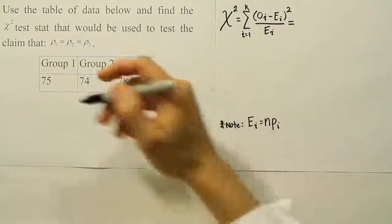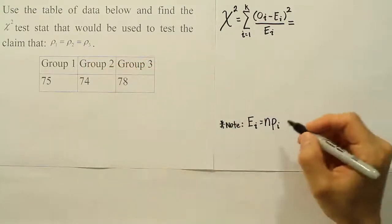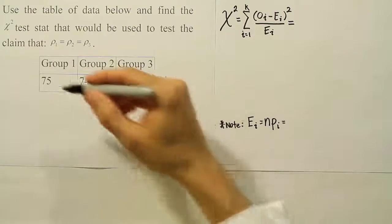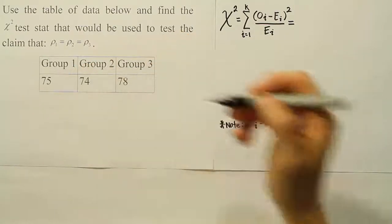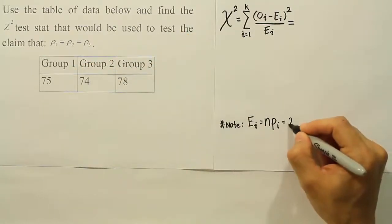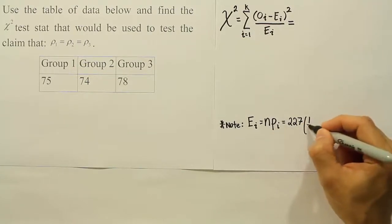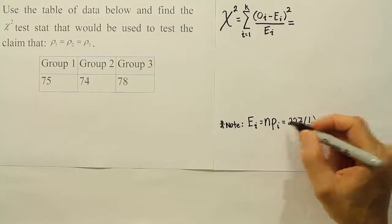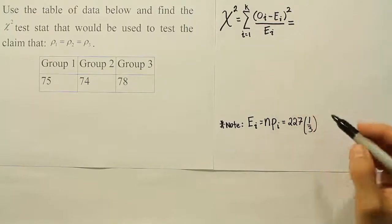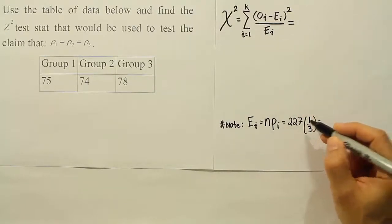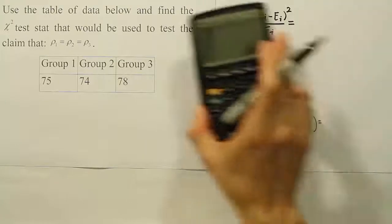And we also know if we add these numbers together, we get 227. So in other words, if I add 75 plus 74 plus 78, I'll get 227. The p_i's are each going to be 1 third, so I can just put one of them in here and do this calculation once to get each of these E_i's, the expected values. And let's work that out and see what that gives us now.